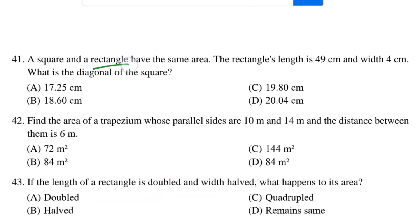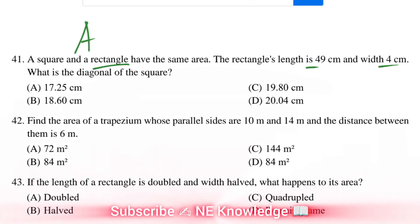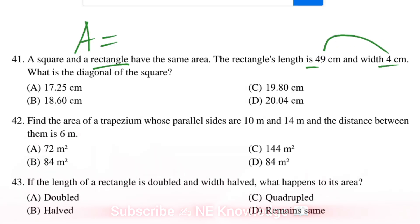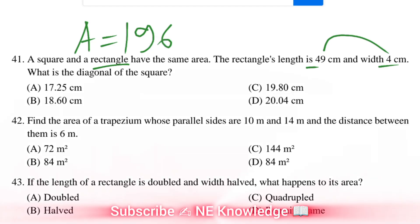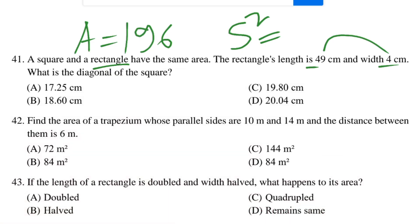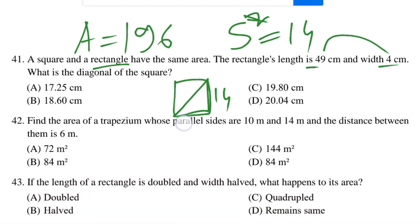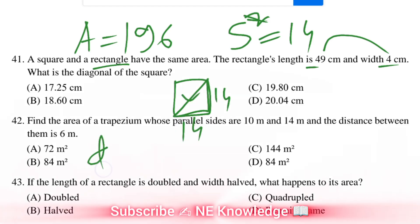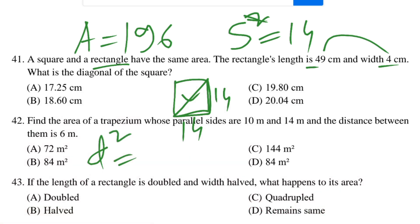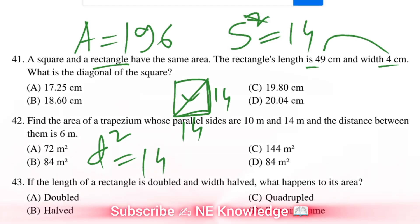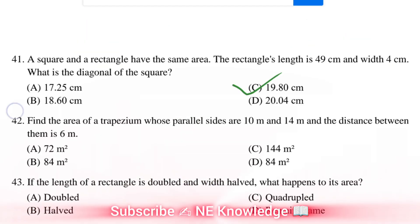The rectangle has length 49 and width 4, giving area 196. Diagonal equals root 2, root 2. Next question is number 42.